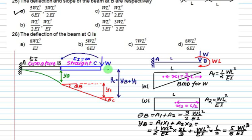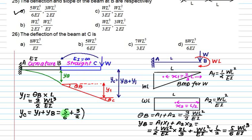To find deflection at C, deflection at C is YB plus Y1. We already have YB. Can we calculate Y1? Y1 equals θB multiplied by the length of part BC, which equals L. Theta B is 3/2 WL², so it becomes 3/2 WL³ divided by EI. Total deflection at C is Y1 plus YB, which equals 5/6 plus 3/2 WL³ divided by EI. Final answer is 7/3 WL³ divided by EI.